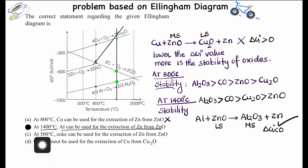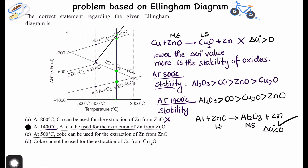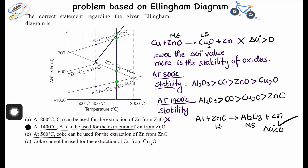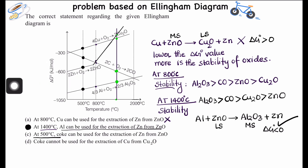The third option states that at 500°C, coke can be used for the extraction of zinc from ZnO. At 500°C, we identify the four points on the respective curves of Al₂O₃, ZnO, CO, and Cu₂O.